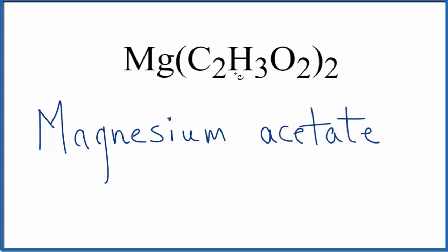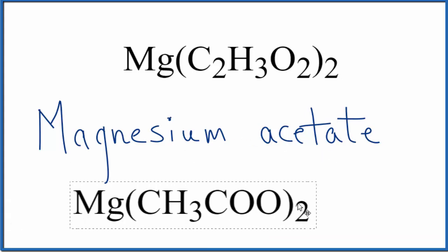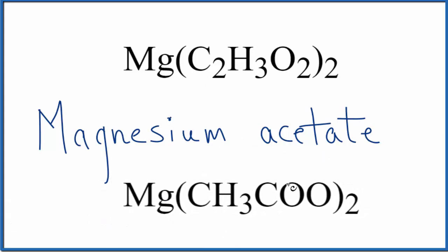You've either memorized that this is the acetate ion, or if you're allowed, you look it up on a table of polyatomic ions. So the name for Mg(C₂H₃O₂)₂ is magnesium acetate. And again, we could also write it as Mg(CH₃COO)₂. We have magnesium, then we have the acetate ion here.